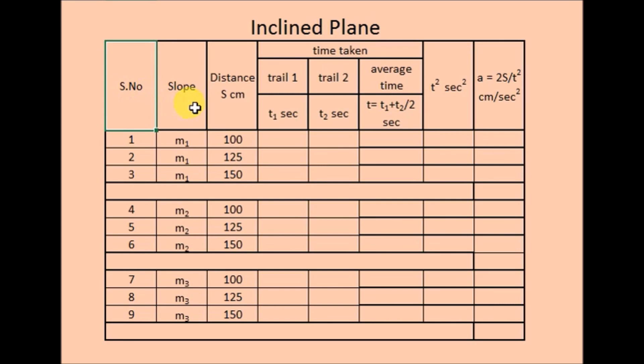In the table, we have serial number, slope, distance or you can say displacement. Under slope, for m1, we will do the experiment for another slope m2 and there is third slope m3. For the slope m1, the experiment will be conducted for three different displacements, 100, 125 and 150.